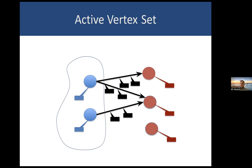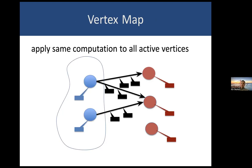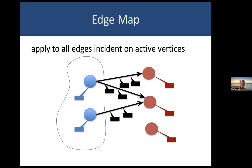The active vertex set is going to be either a singleton vertex — for example, you want to find out all the orders for a particular customer — or it can be a large set of such vertices, for example all the customers. There is syntax to specify what this vertex set should be, and also syntax for computing such a vertex set. When it comes to mapping, you can apply the same computation to all active vertices — that is what we call a vertex map — and you can also apply the computation to all the edges incident on these active vertices, which is what we call an edge map.